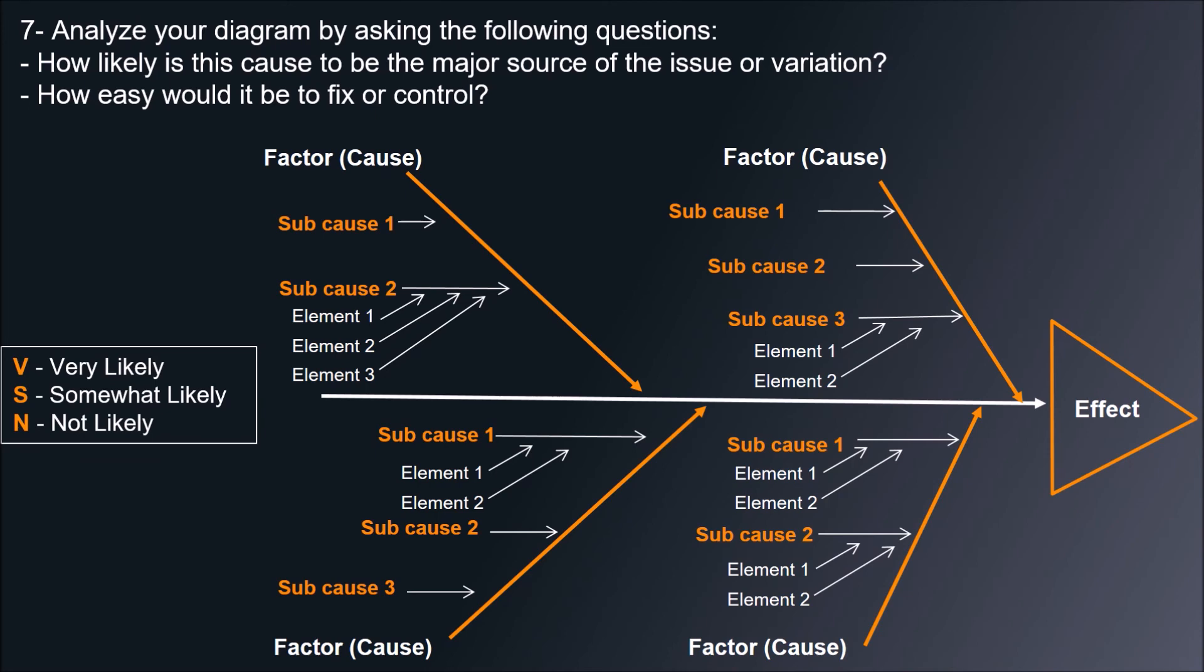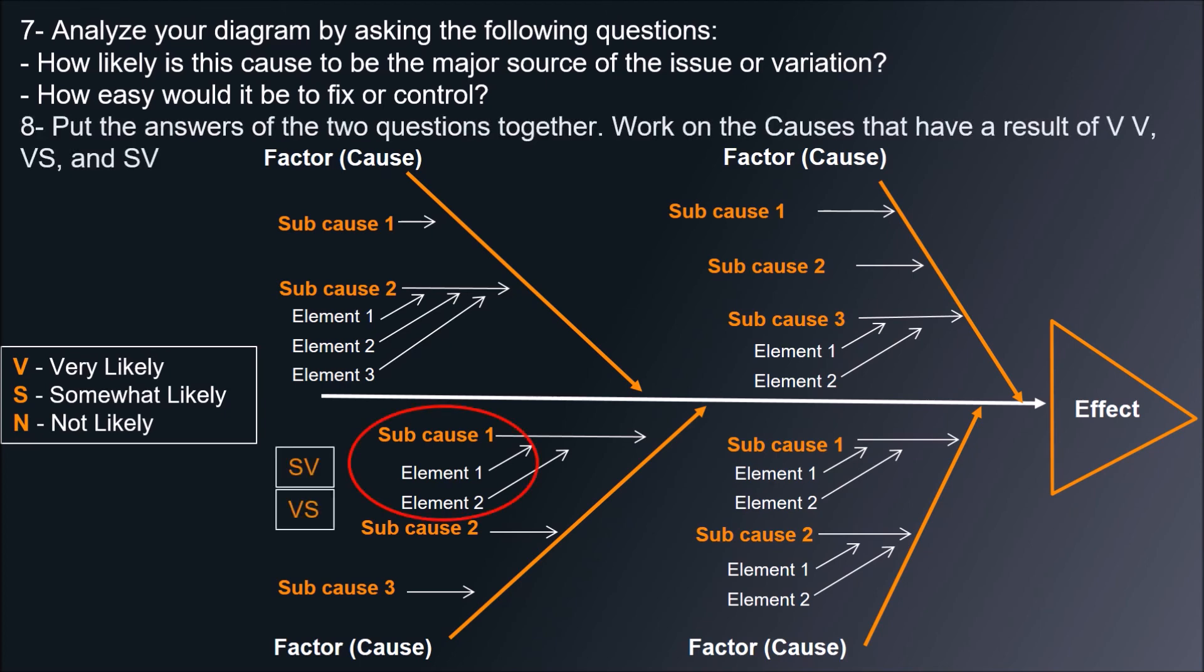You should get answers very likely, somewhat likely, or not likely. Put the answers of the two questions together. Work on the causes that have a result of VV, VS, and SV.